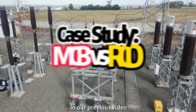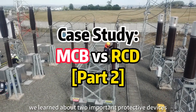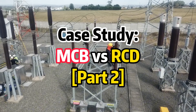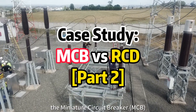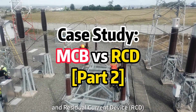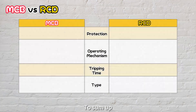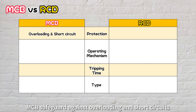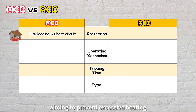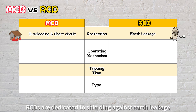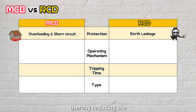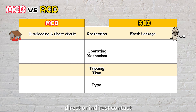Hey everyone. In our previous video we learned about two important protective devices: the Miniature Circuit Breaker (MCB) and Residual Current Device (RCD). To sum up, MCBs safeguard against overloading and short circuits, aiming to prevent excessive heating and potential fire hazards. On the other hand, RCDs are dedicated to shielding against earth leakage, thereby reducing the risk of fatal accidents resulting from direct or indirect contact.